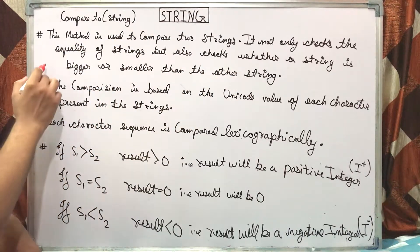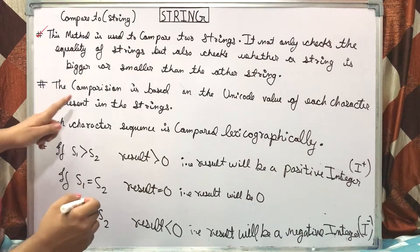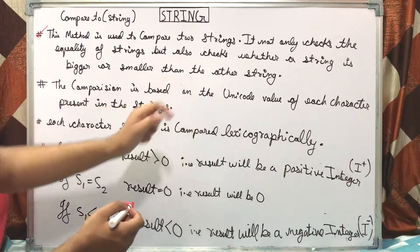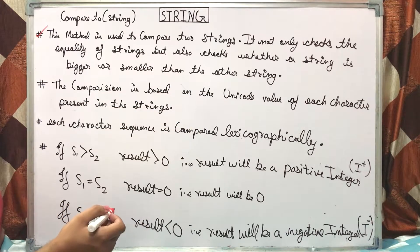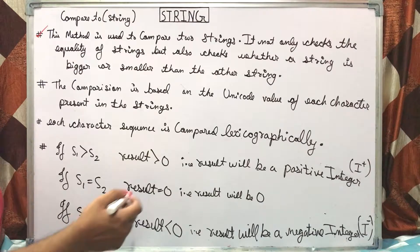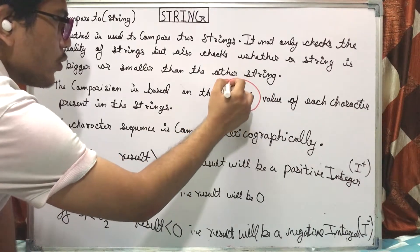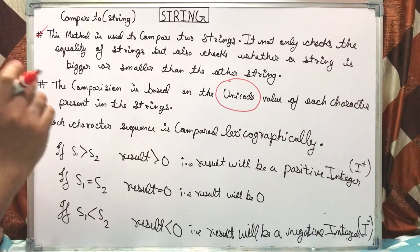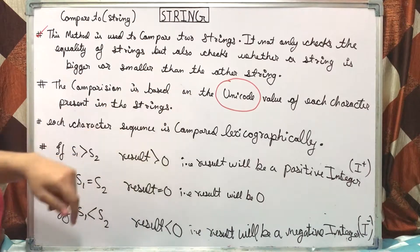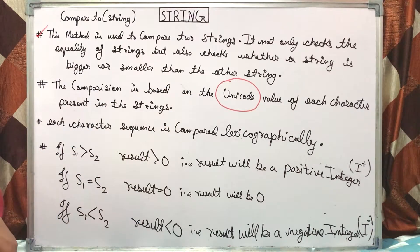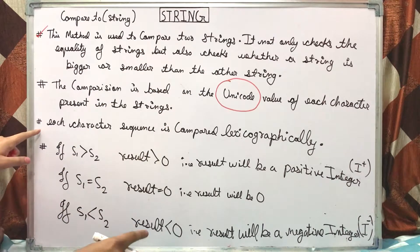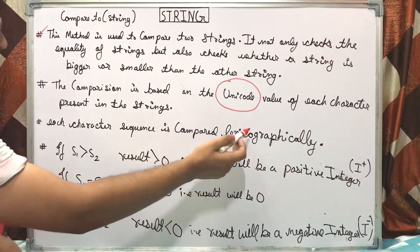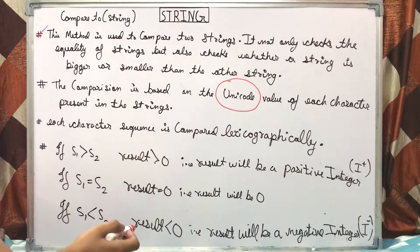The comparison is based on the unicode value of each character present in the strings. When we read ASCII values, they are unicode values. Each character sequence is compared lexicographically — in dictionary order.